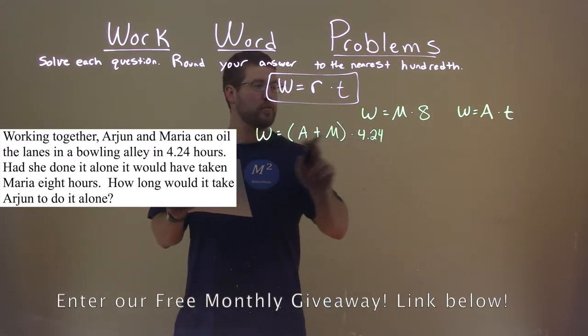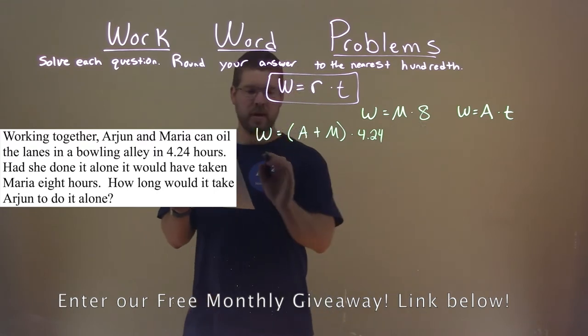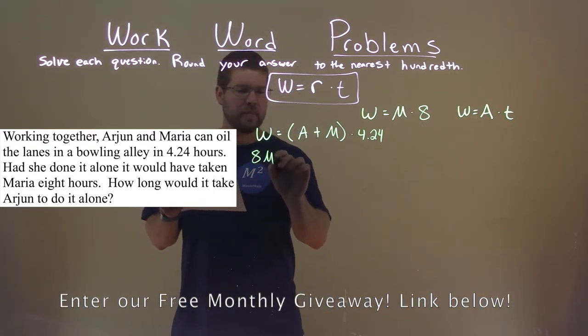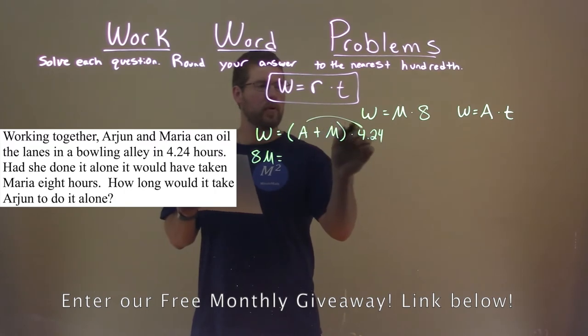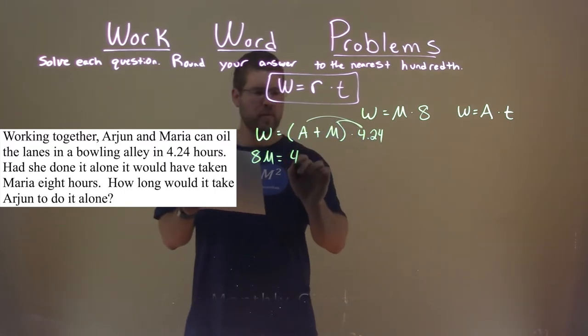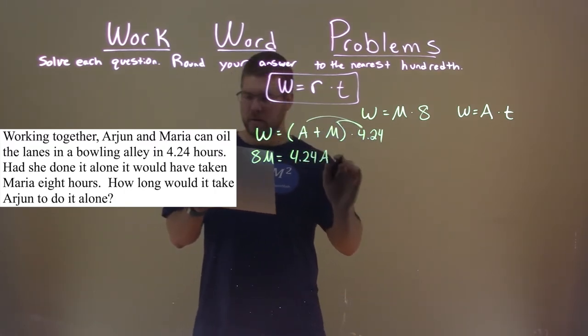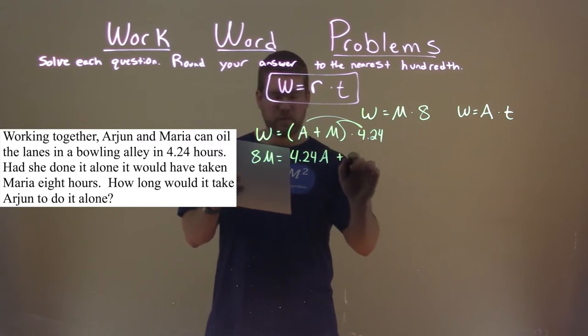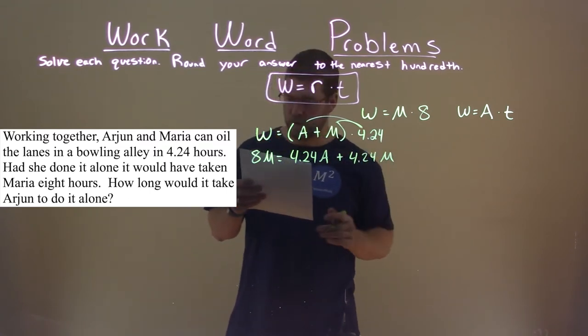Alright, so this work was replaced with Maria's, M times 8 or 8M here, it's the same thing. We're going to distribute the 4.24 to both parts here, and we have 4.24 times Arjun's rate plus 4.24 times Maria's rate.